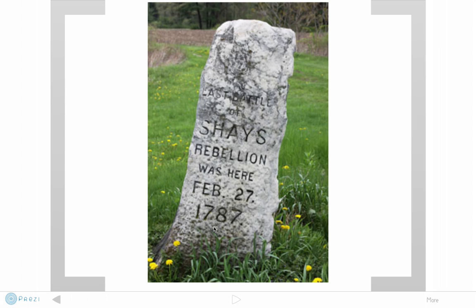What this rebellion did was show everybody in the country that the Articles of Confederation were not working. People were unsatisfied — these farmers in western Massachusetts felt their needs were not being met. People already knew the Articles of Confederation had issues, but now there was a widespread rebellion occurring, and that was shocking in 1787. This was the event that led our founding fathers to say the Articles of Confederation were not working well and something needed to be done to fix it. As you'll see later in this unit, the way they fixed it was to create a new government called the Constitution.